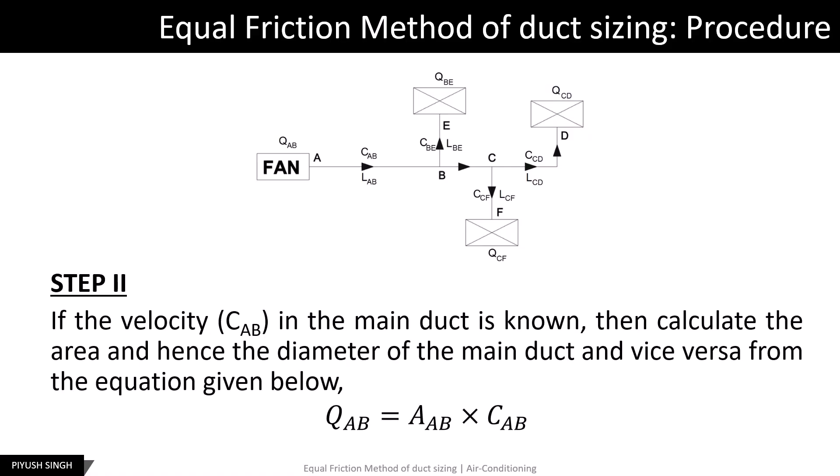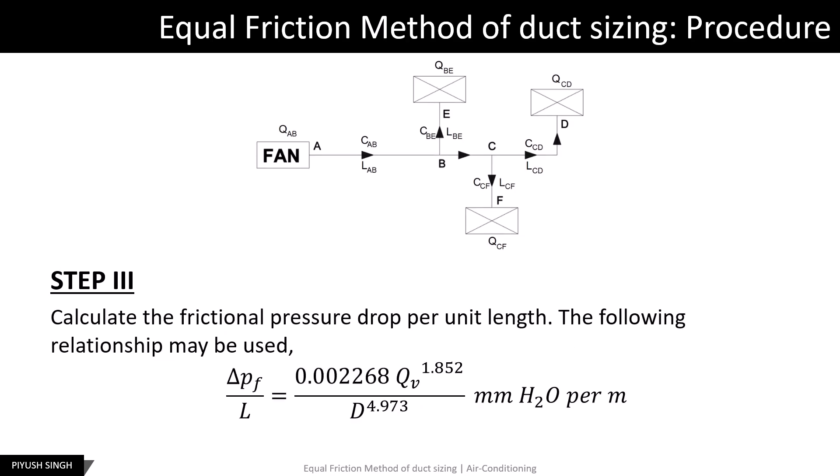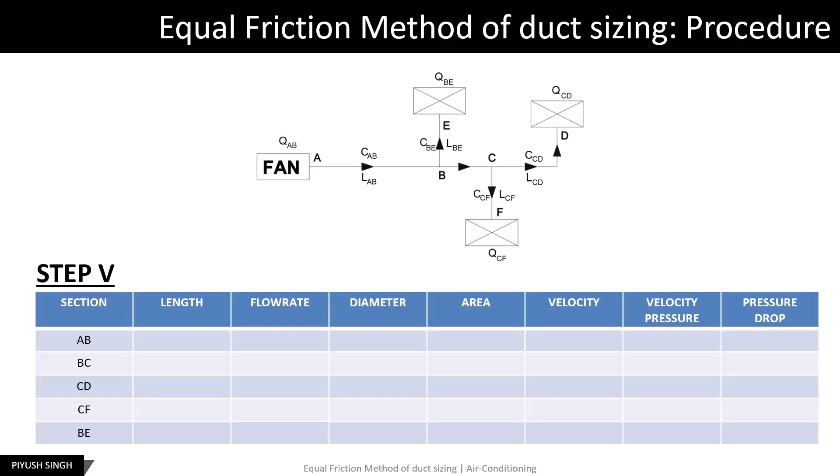The volumetric flow rate is equal to the product of the cross-sectional area of the duct and the flow velocity. If we have the velocity in the main duct, we can calculate the cross-sectional area and hence its diameter. Alternatively, if provided with the cross-sectional area or diameter, we can calculate the velocity. In step 3, we calculate the frictional pressure drop per unit length using the empirical relationship. In step 5, data is compiled in a table showing duct length, flow rate, diameter, area, velocity, velocity pressure, and frictional pressure drop.